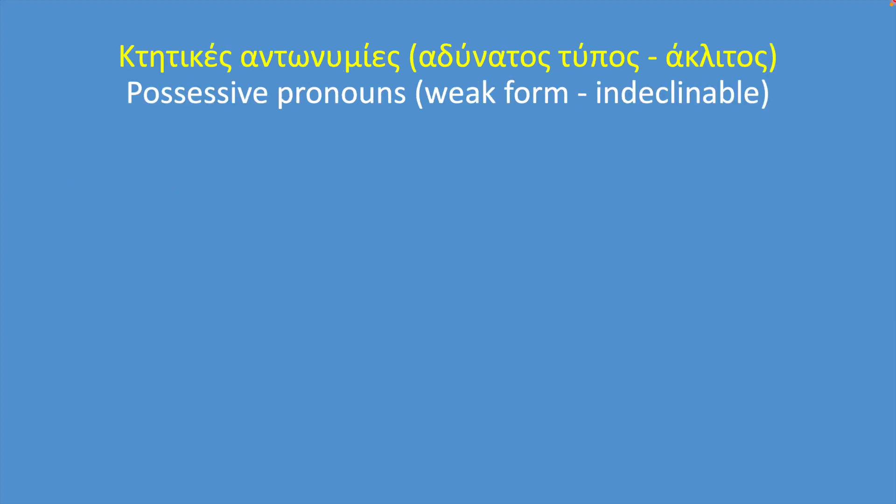Let's take a look first at the weak type. Singular and plural here refer to the number of owners. Singular refers to a single owner, and plural refers to many owners — two or more.